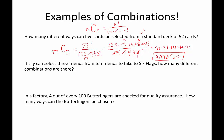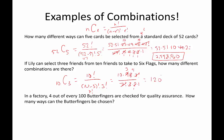In the next example: if Lily can select three friends from 10 friends to take to Six Flags, how many different combinations are there? This would be 10 choose 3. Plugging into the formula: 10 factorial over (10 minus 3) factorial times 3 factorial, which is 10 factorial over 7 factorial times 3 factorial. Expanding: 10 times 9 times 8 times 7 factorial over 7 factorial times (3 times 2 times 1). The 7 factorials cancel; 3 goes into 9 three times, 2 goes into 8 four times, giving 10 times 3 times 4 equals 120.